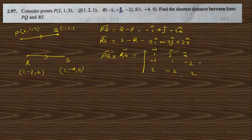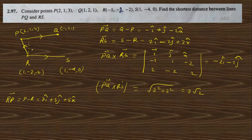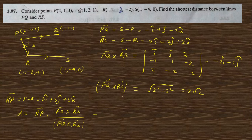The cross product PQ × RS is computed using the determinant with i, j, k and rows (−1, 1, −2) and (2, −2, 2), giving −2i − 2j + 0k. The magnitude of this cross product is √(4 + 4) = 2√2. Then rp vector = P − R = (2−1, 1−(−2), 3−(−2)) = 3i + 3j + 5k.